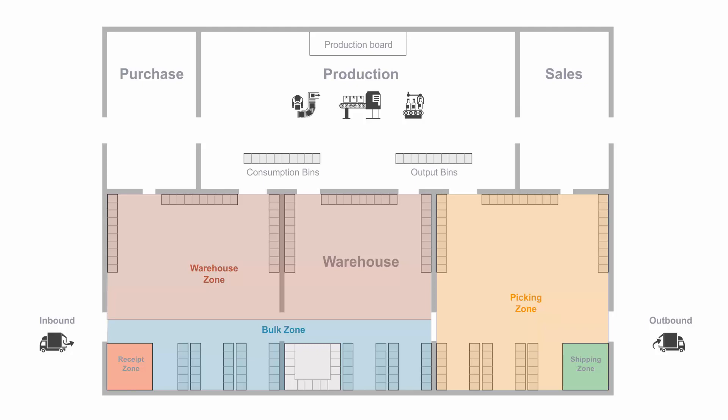From the bulk zone, I will refill my warehouse zone to be able to pick faster. Then I have a production zone. It could have just one bin, but if I have a complex production, I could add many bins — consumption and output bins — in my production zone, so I could pick into that zone.